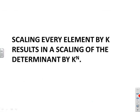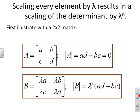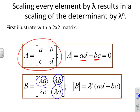Next rule: scaling every element in a matrix by some constant lambda results in scaling the determinant by lambda to the power n, where n is the dimension of the matrix. For a 2×2 matrix A with determinant AD − BC, if every element is scaled by lambda, the determinant of B becomes lambda squared times (AD − BC), i.e., lambda squared times det(A).